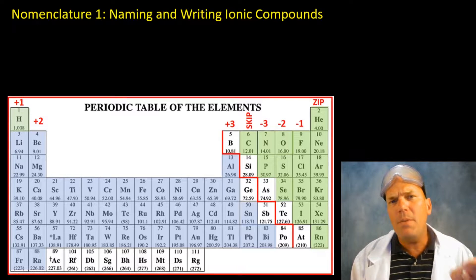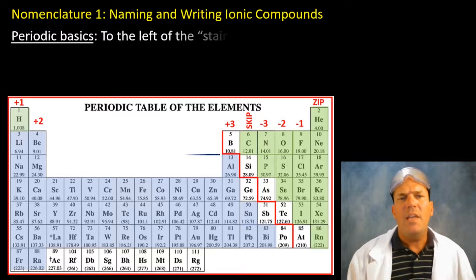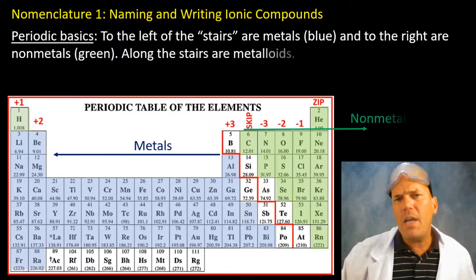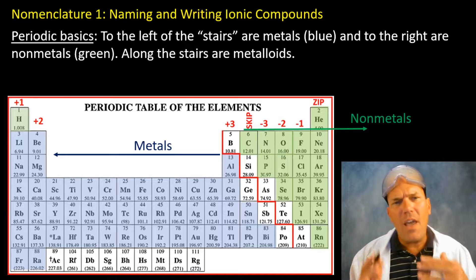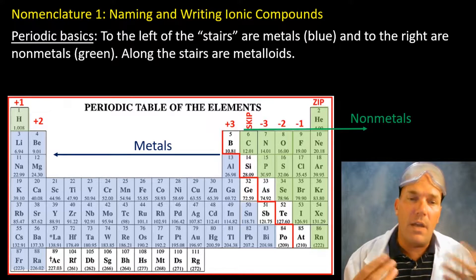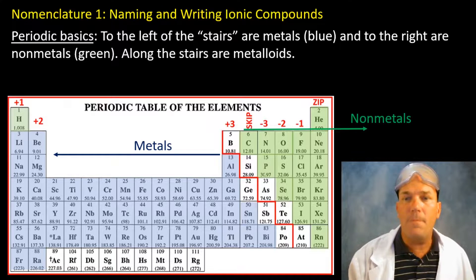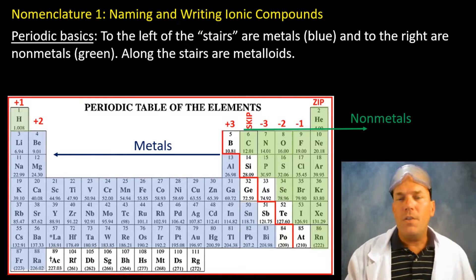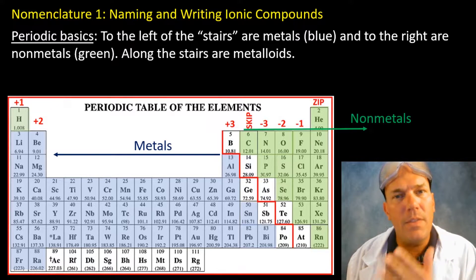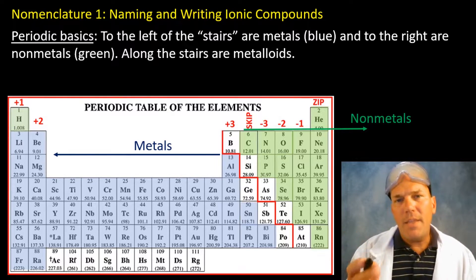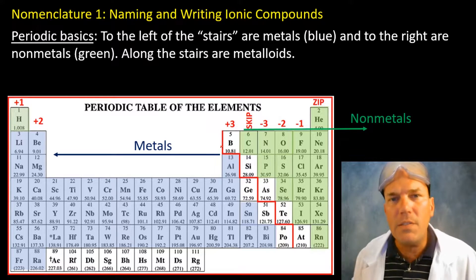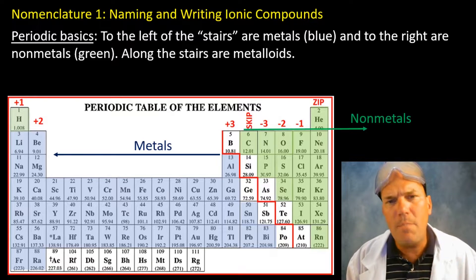I'm going to go through the periodic basics to lay a foundation for naming chemical compounds. All species to the left of the stairs are metals — I've used blue to indicate them on the screen. All species to the right of the stairs are non-metals, shown in green. The chemical species in white along the stairs are known as the metalloids.